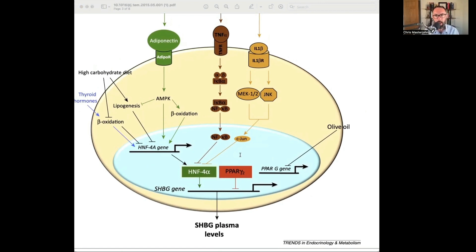Wait a second. Let me see. Olive oil, they're saying increases it. That's what they say in the text. Oh, I see. Olive oil is preventing the transcription of PPAR gamma. And because PPAR gamma prevents the transcription of SHBG, you have a double negative effect. And they're saying that olive oil increases it.